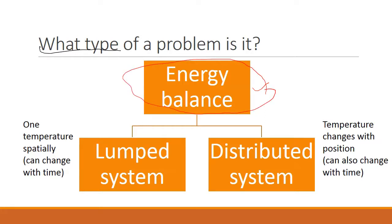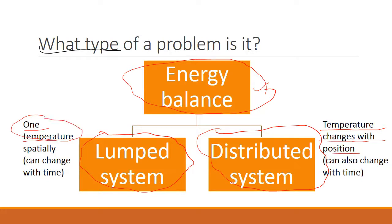Now, we can think of energy balance problems loosely of two types. One is this distributed system where temperature is not really same all through my domain. So temperature changes with position and, of course, it can change with time. The other kind is the simpler or lump system where temperature does not vary spatially. So there is only one temperature.